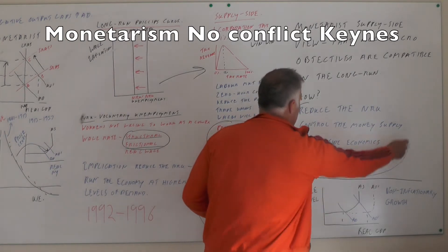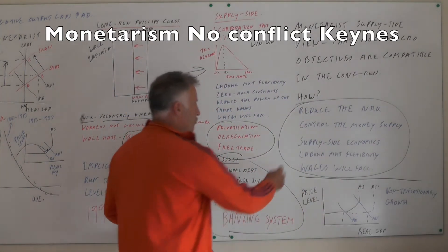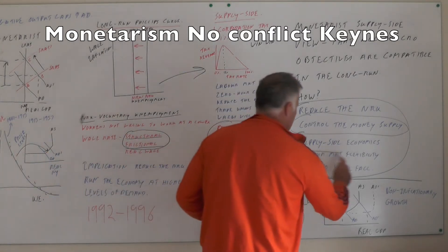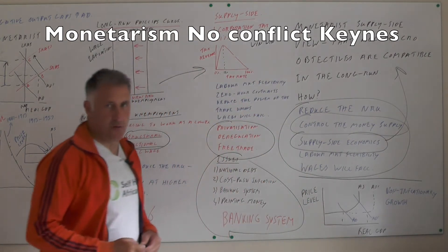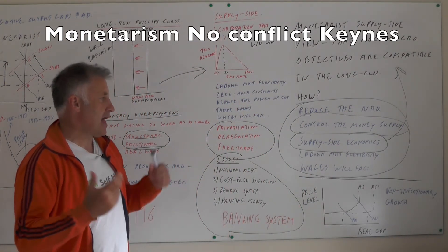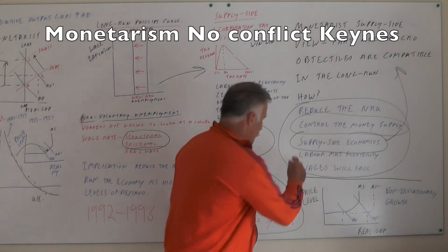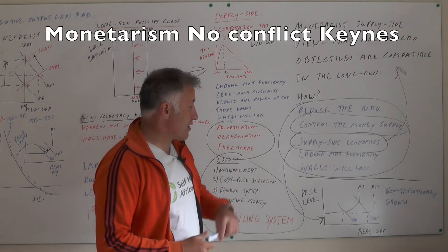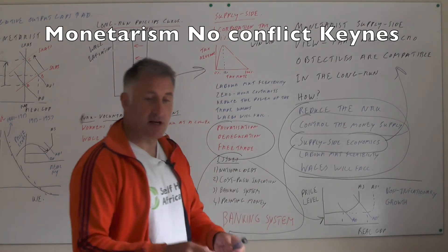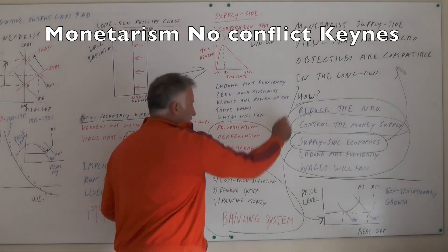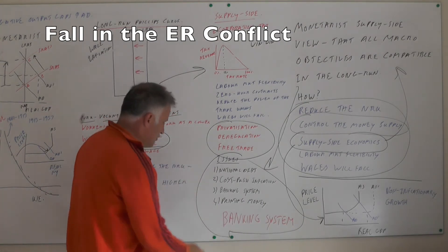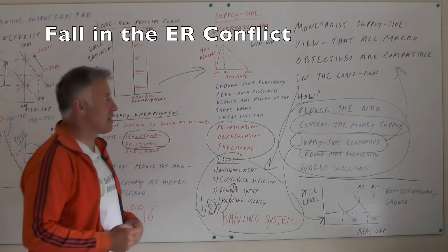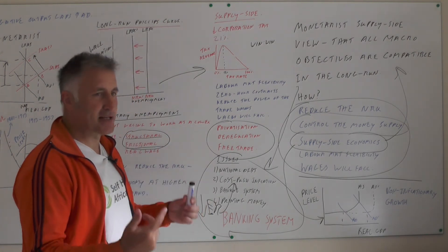Basically, if you're a monetarist you want to reduce the natural rate of unemployment, shift the long-run Phillips curve inwards, and control the money supply to control inflation — though that theory has come under a lot of criticism. Use loads of supply-side economics, and that's why all macro objectives are compatible in the long run. However, don't underestimate demand-side economics — low interest rates and fiscal policy matter too. In an essay, put it in context: for example, lowering the exchange rate may lead to cost-push inflation, but all objectives are compatible in the long run.